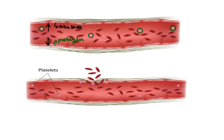Now what happens when there is a damaged blood vessel, let's say due to a skin cut? Well, suddenly we have less nitric oxide and prostacycline around, so blood vessels become constricted and platelets become activated. But first things first — with the help of von Willebrand factors, platelets adhere to exposed collagen, which in turn causes them to change shape.